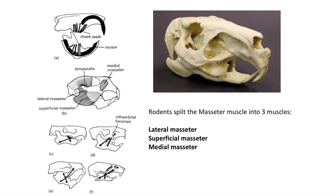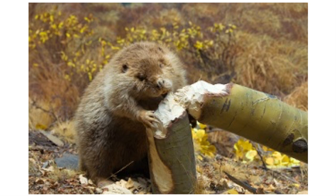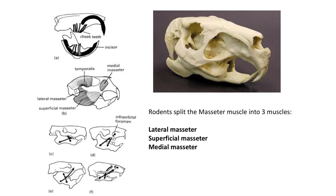Rodents are characterized by having ever-growing incisors, and in some cases molars as well. These incisors are rooted deep in the lower and upper jaws, and the function of the incisors for biting, nipping, and gnawing is related to a complex set of jaw muscles. The masseter muscle is split into three muscles: the lateral masseter, the superficial masseter, and the medial masseter. This is the major chewing muscle in mammals, and connects the dentaries with the maxilla along the jugal or zygomatic arch.